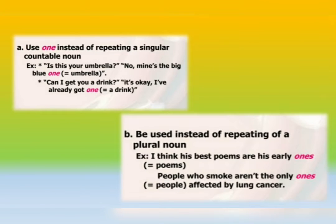We use 'one' instead of repeating a singular countable noun. Is this your umbrella? No, mine is the big one. The big blue one. We can also use it for a plural noun: I think his best poems are his early ones.